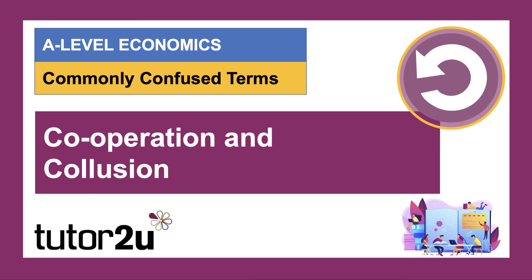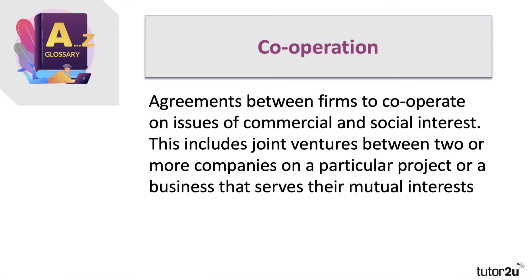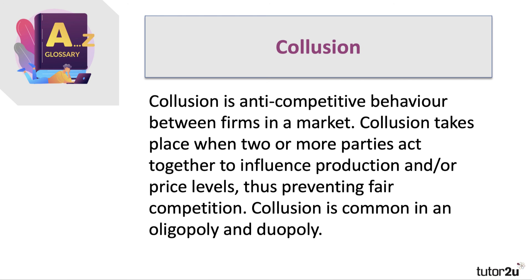Cooperation and collusion — similar sounding terms, but different. Cooperation is any form of agreement between firms to cooperate on issues of commercial and social interest. That might involve businesses in an industry agreeing a joint industry standard, such as car safety belts and safety systems, or joint ventures between two businesses with a project of mutual interest. Whereas collusion is anti-competitive behaviour — be it tacit or explicit — where two or more parties act together to control supply, perhaps fix prices, share the market, and thus prevent fair competition. Collusion is common in an oligopoly and game theory can be used to explain that.